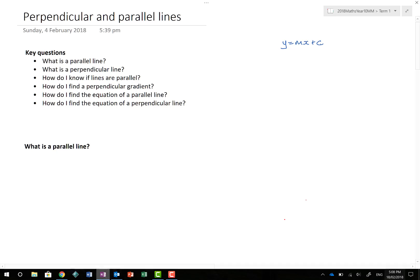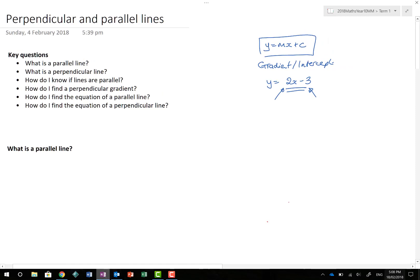In previous lessons we looked at lines having particular ways of being written. If it's written in y equals mx plus c we call it the gradient intercept form. An example might be y equals 2x minus 3 because we can see the gradient and the intercept. We can also sketch these things.